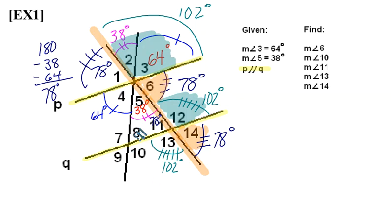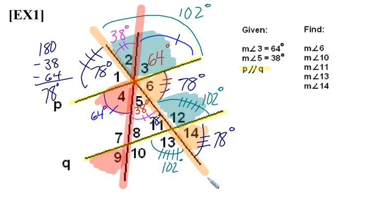For the last part of this problem, we need to figure out angles 7, 8, 9, and 10. Consider the transversal just highlighted in red. When looking at that transversal, angle 4 and angle 9 are corresponding angles formed by parallel lines, so they must be congruent. Since angle 4 is 64 degrees, angle 9 is also 64 degrees. Since vertical angles are congruent, angle 8 is also 64 degrees. Then using linear pairs, 180 minus 64 gives us 116 degrees for both angles 7 and 10.